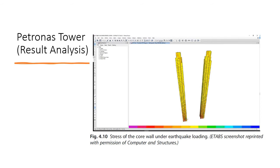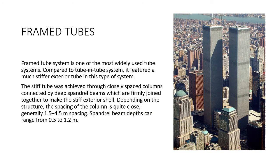This is the stress of the core wall under earthquake loading. Next is the frame tube system. The frame tube system is one of the most widely used tube systems compared to tube-in-tube. It features a much stiffer exterior tube, achieved through closely spaced columns connected by deep spandrel beams which are firmly joined together to make a stiffer exterior shell.